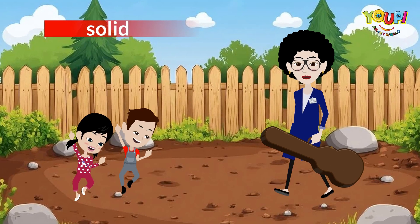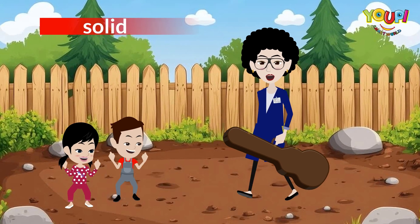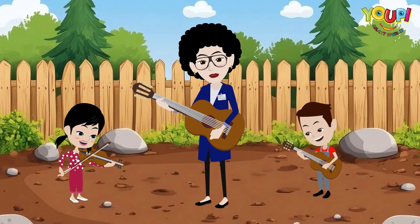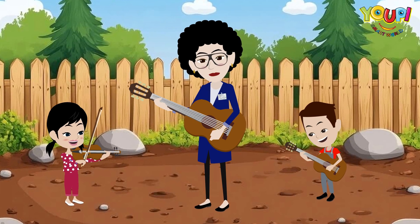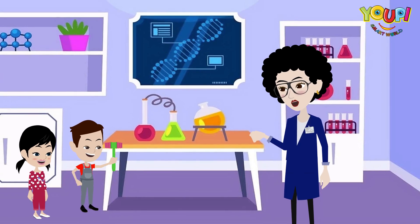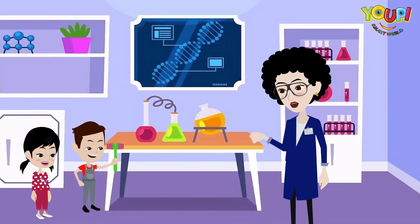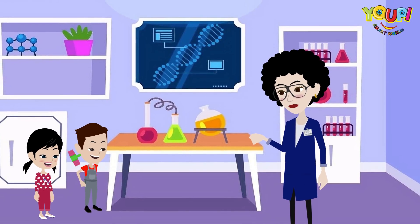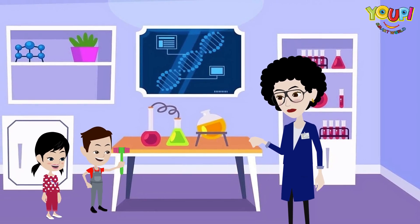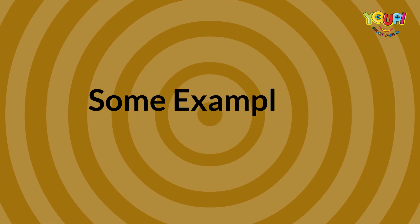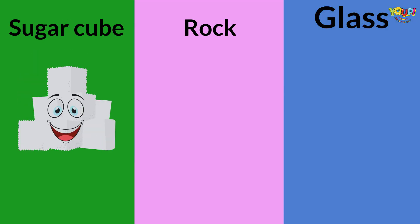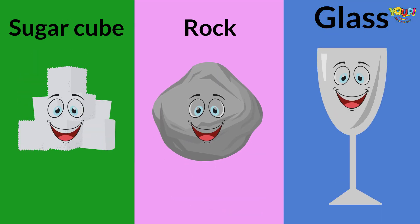First up: solids. Solids are like rock stars — they're super strong and stay in the same shape. Just like this rock. Knock knock. See? It doesn't change shape no matter what. Solids stay solid. Some examples of solid matter are sugar cube, rock, and glass.